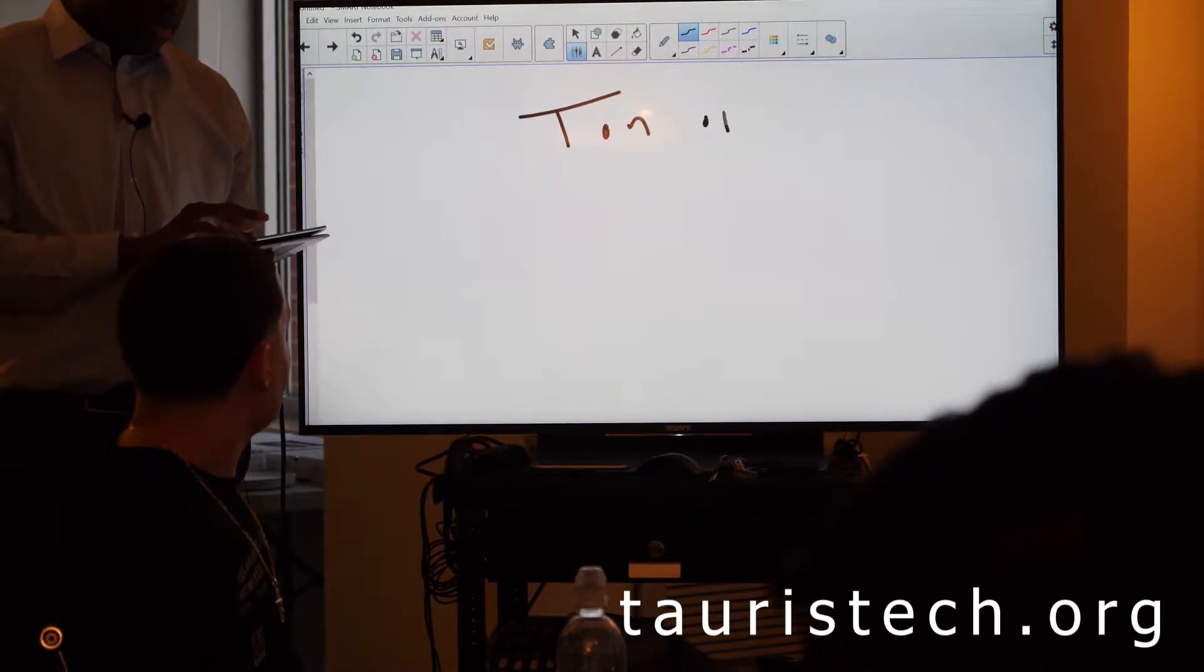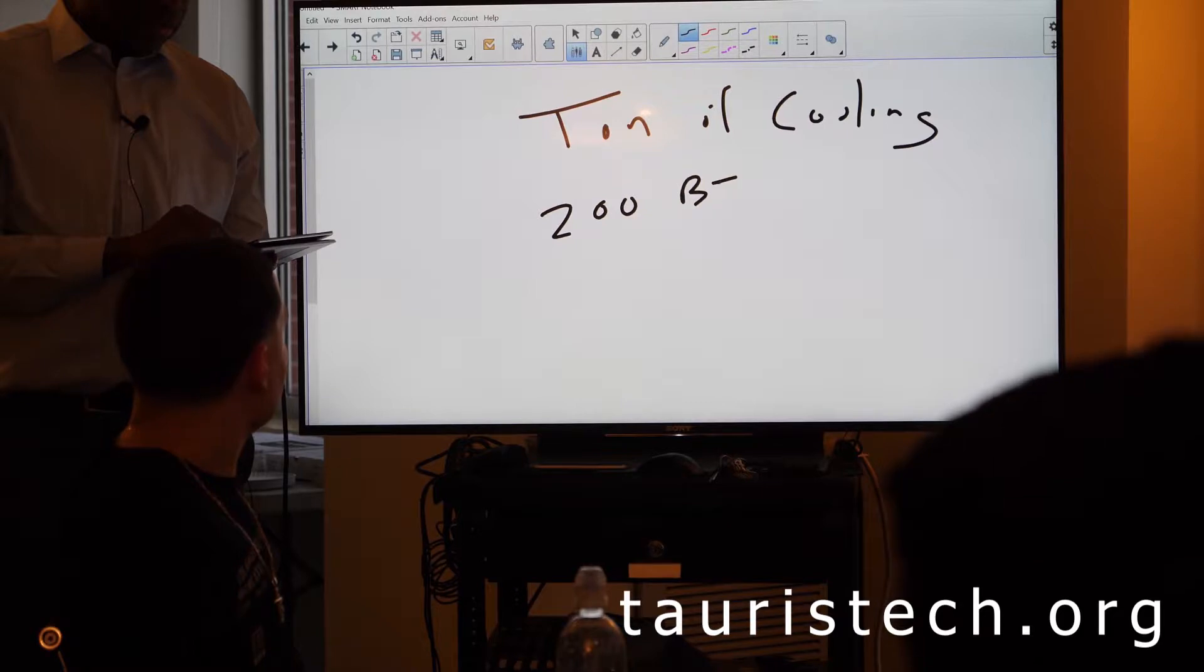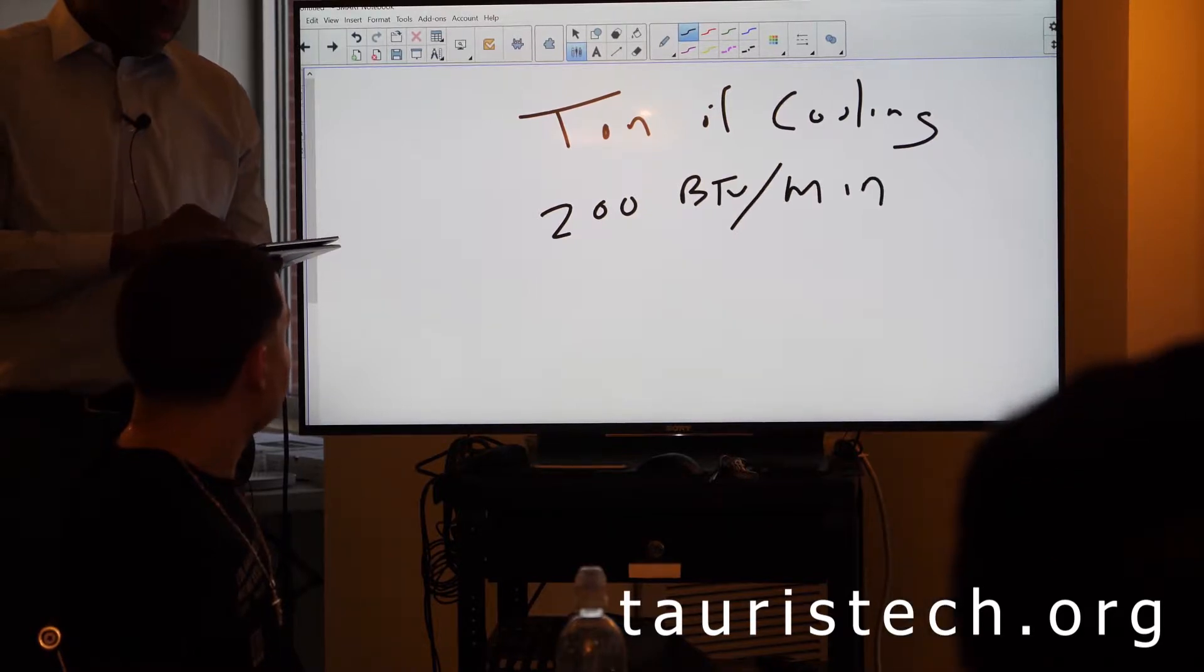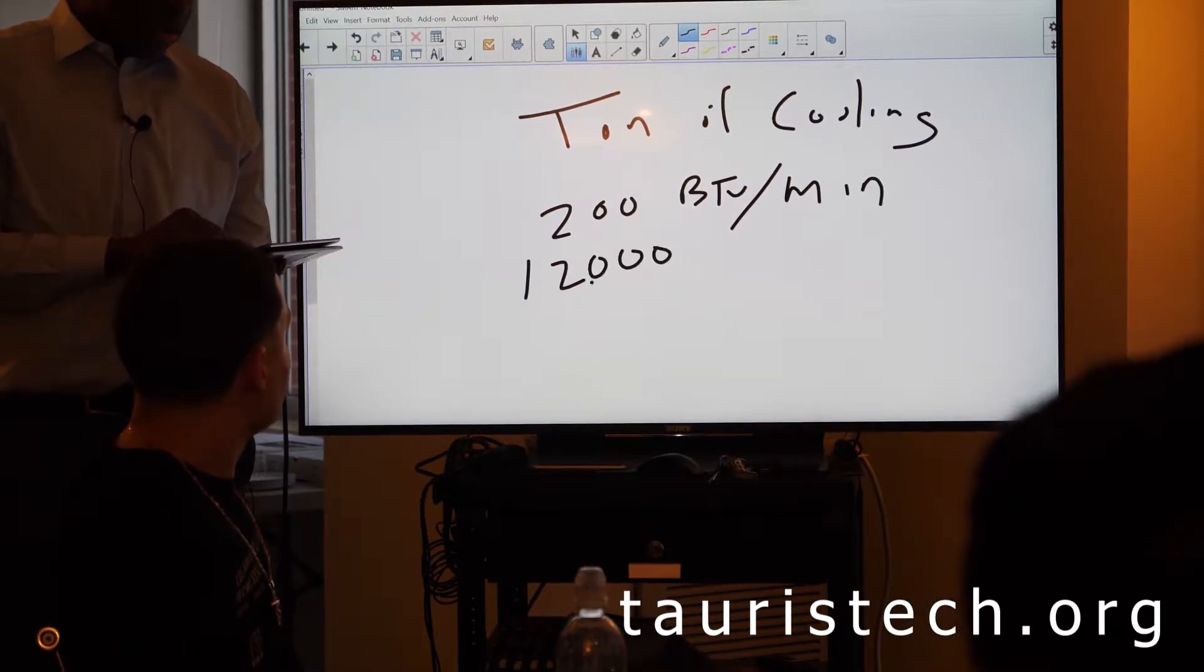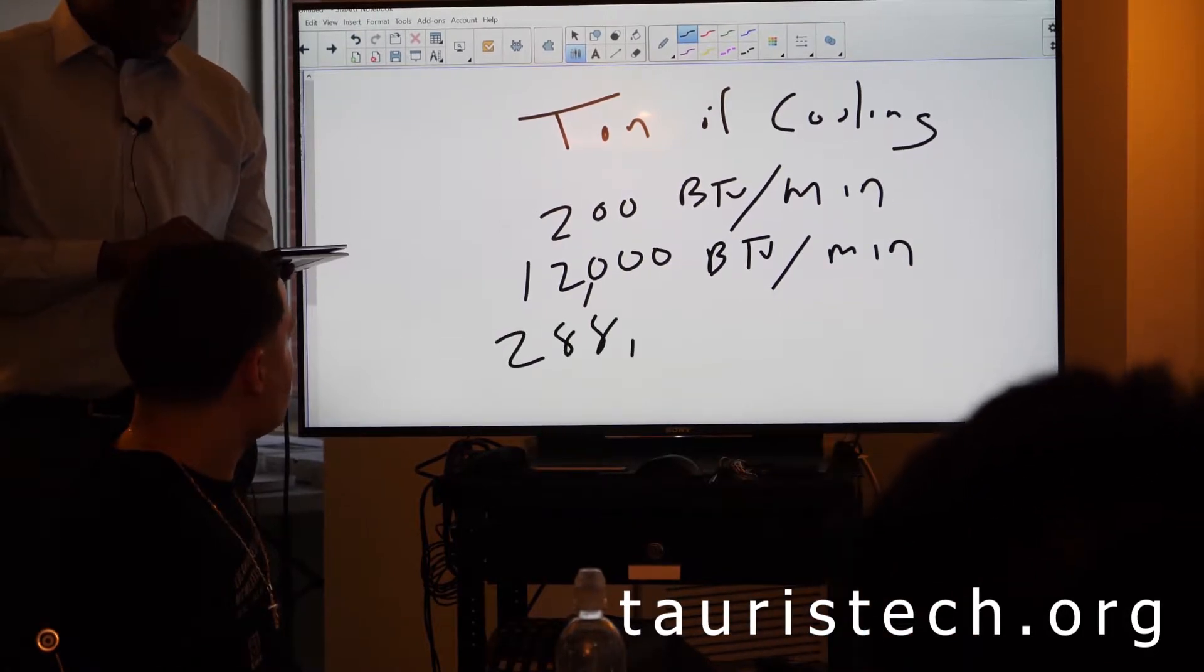A ton of cooling is 200 BTU a minute, 12,000 BTU an hour, or 288,000 BTU a day.